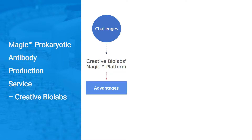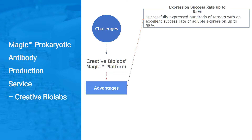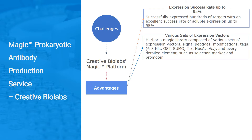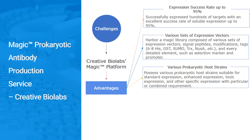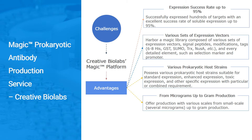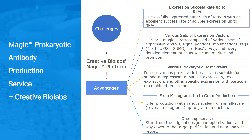Here are some featured advantages in our Gram Scale service: expression success rate up to 95%, various sets of expression vectors, various prokaryotic host strains, production from micrograms up to gram scale, and one-stop service starting from the original design and optimization all the way to target purification and data analysis report.